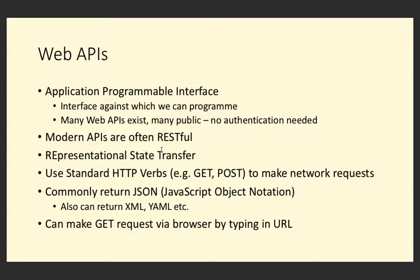When we put in a request, rather than getting back HTML like from a regular web page, we typically get back something like JavaScript Object Notation - JSON. It might not be JSON, it might be XML or YAML, depending on the API and possibly the type of request. Some APIs will look at the headers in the HTTP request to see if we can accept JSON or XML and make a decision on what to send back. You can make a GET request by simply typing a URL into the browser.